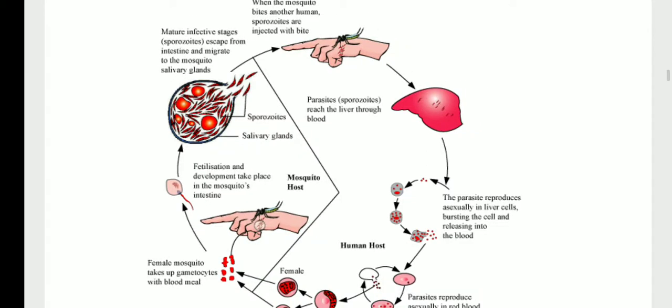The life cycle of Plasmodium is now complete. Remaining topics — non-communicable diseases, cancer, AIDS, and immunity — will be covered in the next part and the coming week.